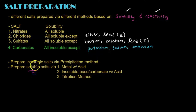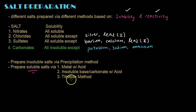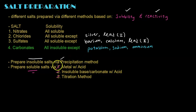The first method is for soluble salts: reacting metal with acid. The second is reacting insoluble base with an acid. Third is using the titration method. So there are three methods for soluble salts. Then there's only one for insoluble salts, which is precipitation. Let's start with the first one — metal with acid.